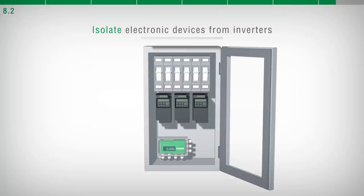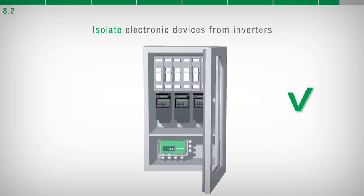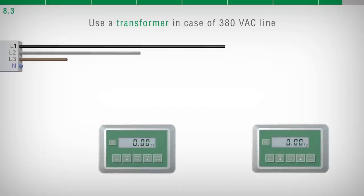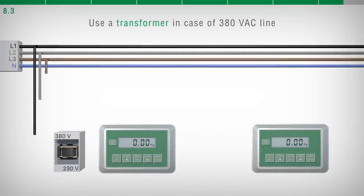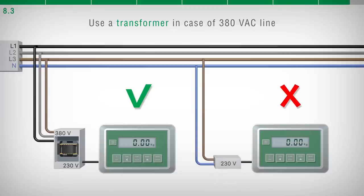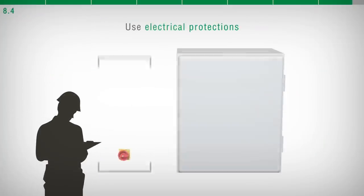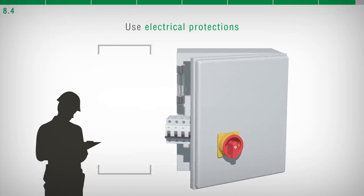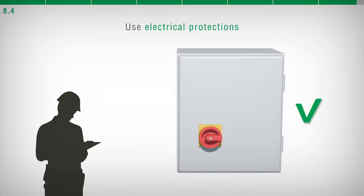However, if this cannot be avoided, install special filters and insert separation plates between the inverters. In case of power supply 230 VAC, a 380 to 230 VAC transformer must be used. Do not use a 380 VAC phase and the neutral one. The person in charge of the electrical panel must prepare and install all the electrical protections needed to ensure the safety of the plant.